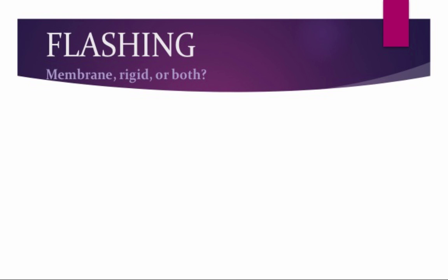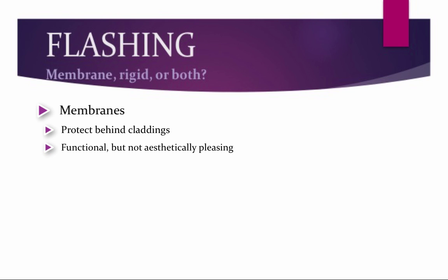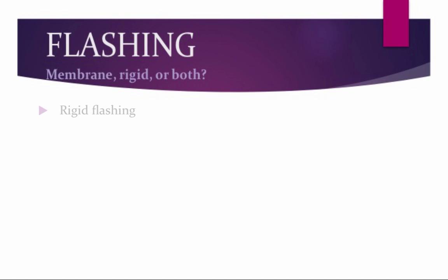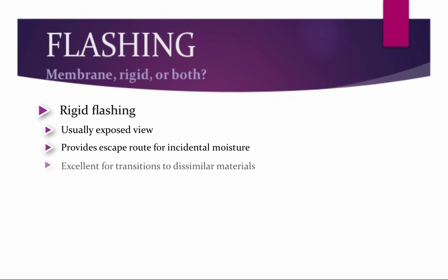Now we'll discuss the need for membranes, rigid, or both. Membranes simply protect behind the claddings as a secondary backup to rigid flashing. They are functional but not aesthetically pleasing; however, they are very flexible and easy to install. Rigid flashing is usually exposed to view. It provides an escape route for incidental moisture and is excellent for transitions to dissimilar materials. Rigid flashing can be incorporated into aesthetic design — for example, using copper flashing exposed to view to add to the beauty of the building.